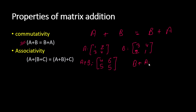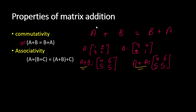Now let's find B + A, where B is the first matrix and A is the second. We get: 3+1=4, 4+2=6, 2+3=5, and 1+4=5. We can see that both A+B and B+A give the same result, so the commutativity property holds.